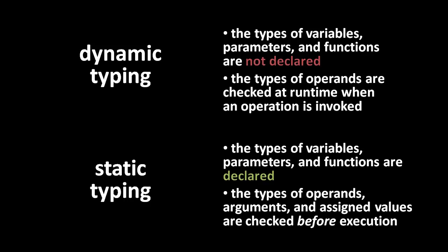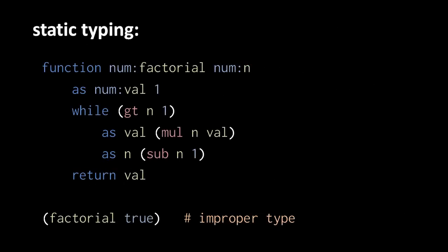So say we wanted to turn pidgin into a statically typed language. We could do so quite simply by requiring type declarations for every variable, every function parameter, every function return type, and every created collection. Let's say the declarations are written as type names prefixed with a colon.